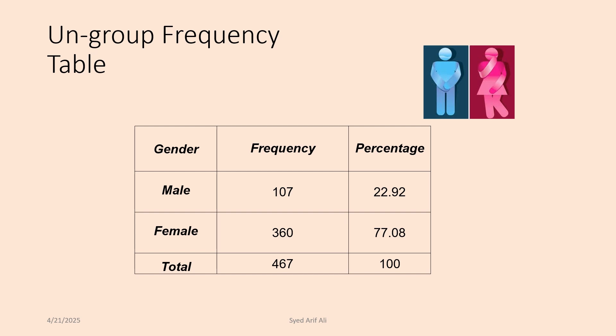For example, the gender variable has predefined groups like male and female.